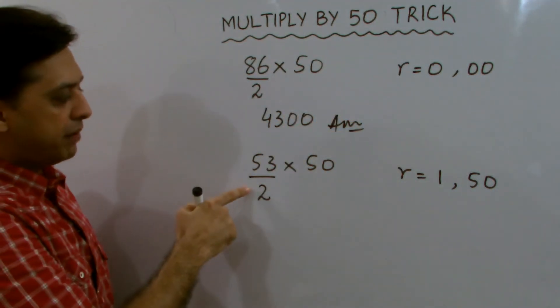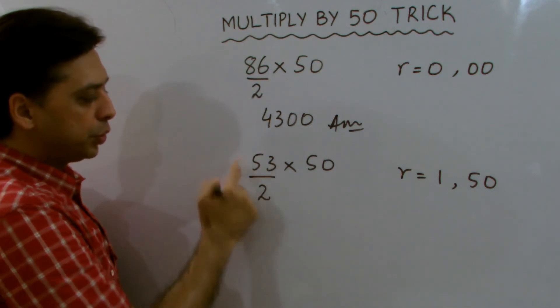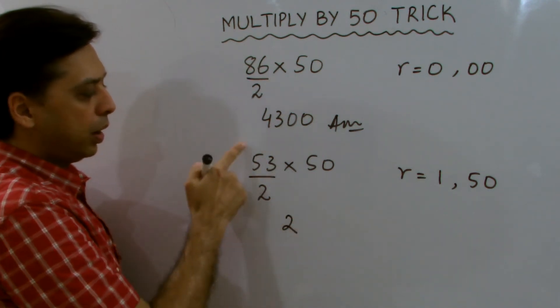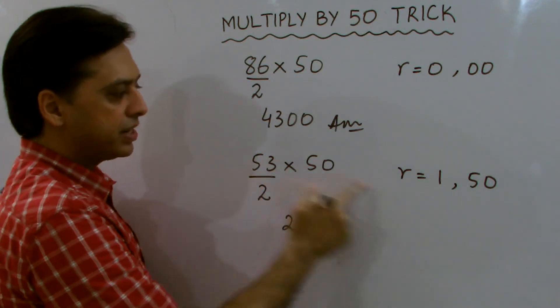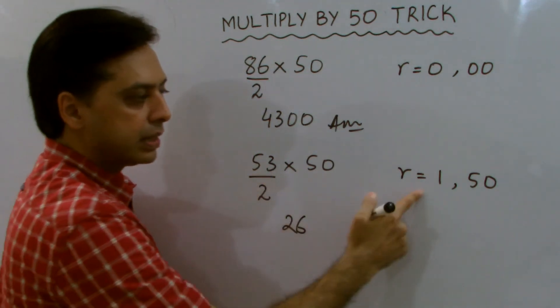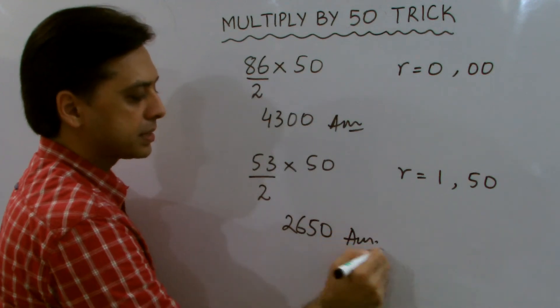In the other case, when you divide 53 by 2, you perform the division: 2 times 2 is 4, and 2 times 6 is 12, with remainder 1. The quotient is 26. Since the remainder is 1, write 50 next to it, and that's your answer: 2650.